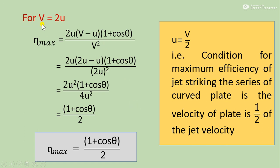Substituting V equals 2u into the efficiency formula: eta equals 2u·(V minus u)·(1 plus cos theta) divided by V squared. With V equals 2u, V minus u equals 2u minus u equals u, and V squared equals 4u squared. So eta equals 2u·u·(1 plus cos theta) divided by 4u squared. The u squared terms cancel, giving maximum efficiency equals (1 plus cos theta) divided by 2.